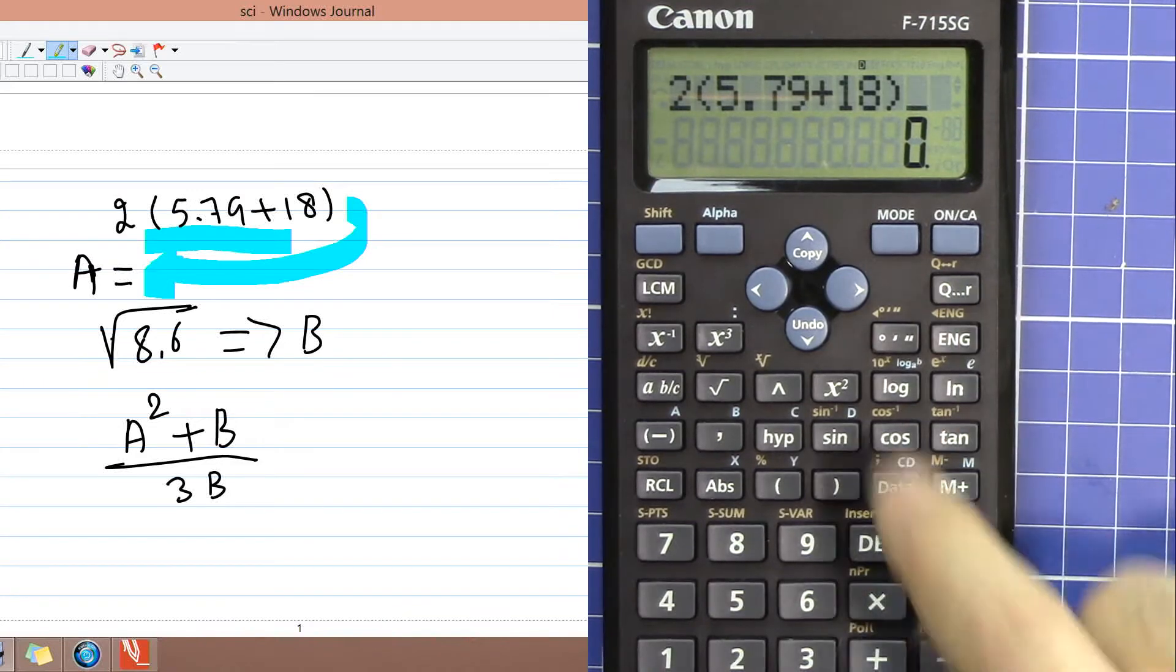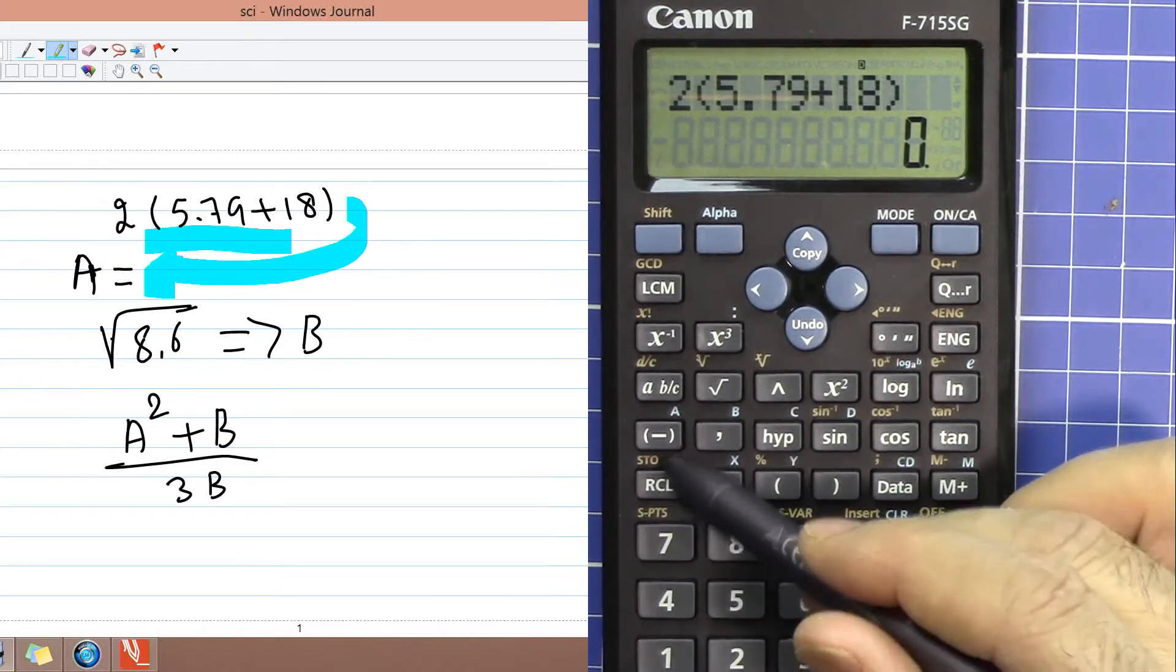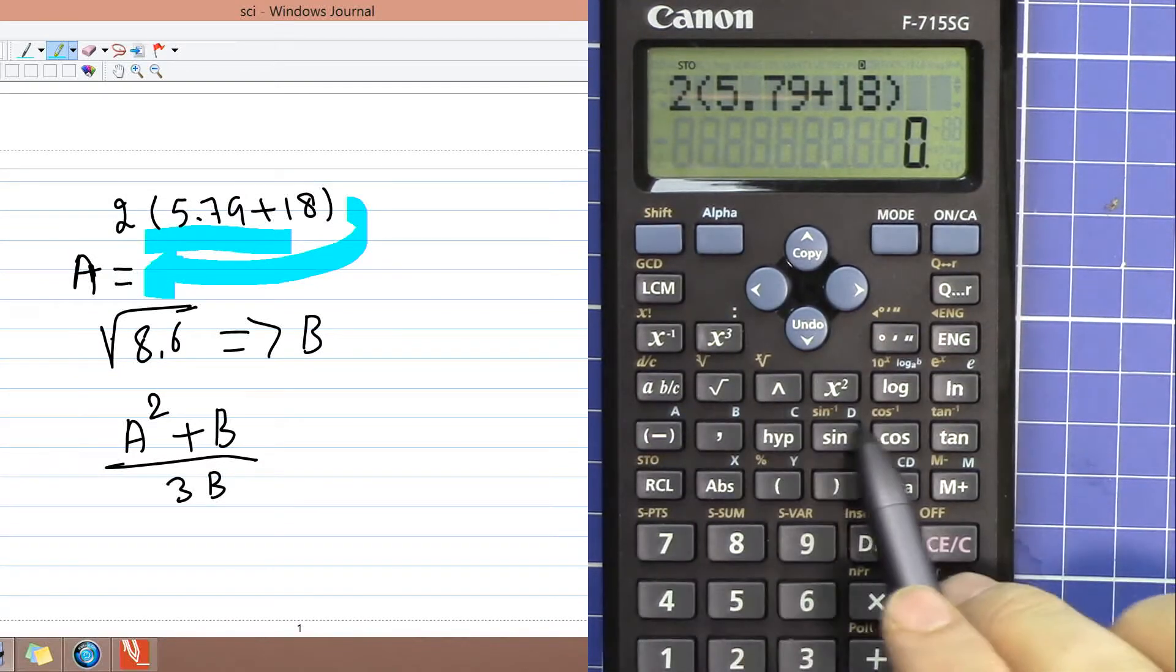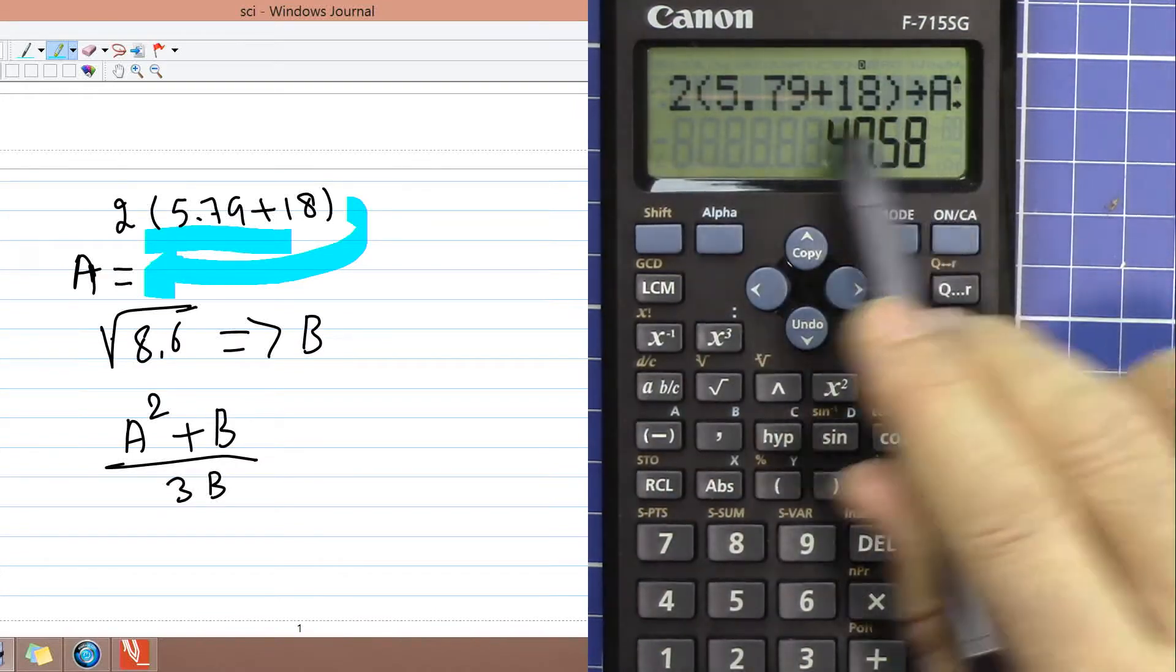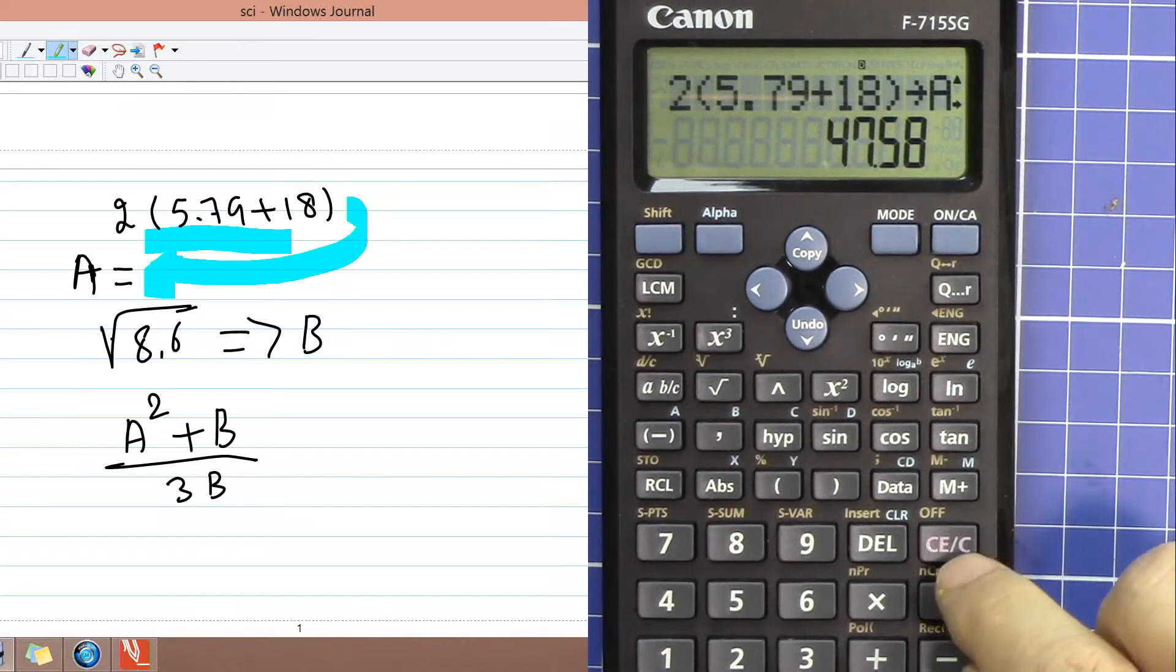To store the value into A, this is the store button. Press shift, store, and now you can press any button you want to store the value. I'm pressing A, so it shows that value is stored in A. The result of the calculation is this and also stored in A. So now let's clear the screen.